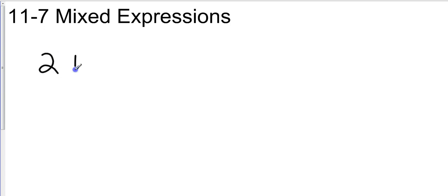So if I take an example — and this is the first example on page 714 — I want you to take 2 plus 4 over x minus 1, and write that as a rational expression. You're probably going to look at me and tell me I'm crazy, but let's work with this just a little bit.